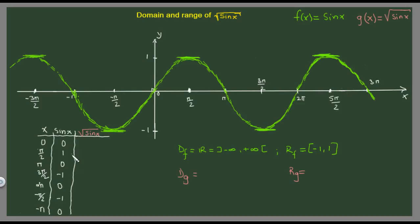Now we can use the same table values but this time use it with the square root of sine of x. So if we take the value here, the square root of zero is going to be zero. Square root of one is one. Zero is zero. This one is undefined. And zero is zero. Minus one is also undefined, and zero is zero.